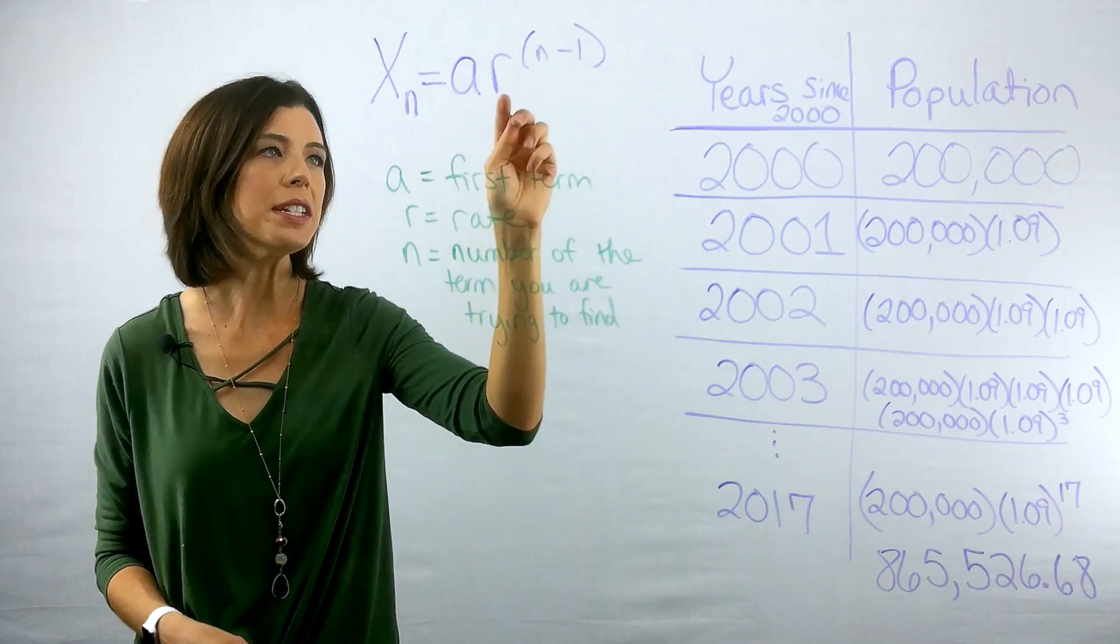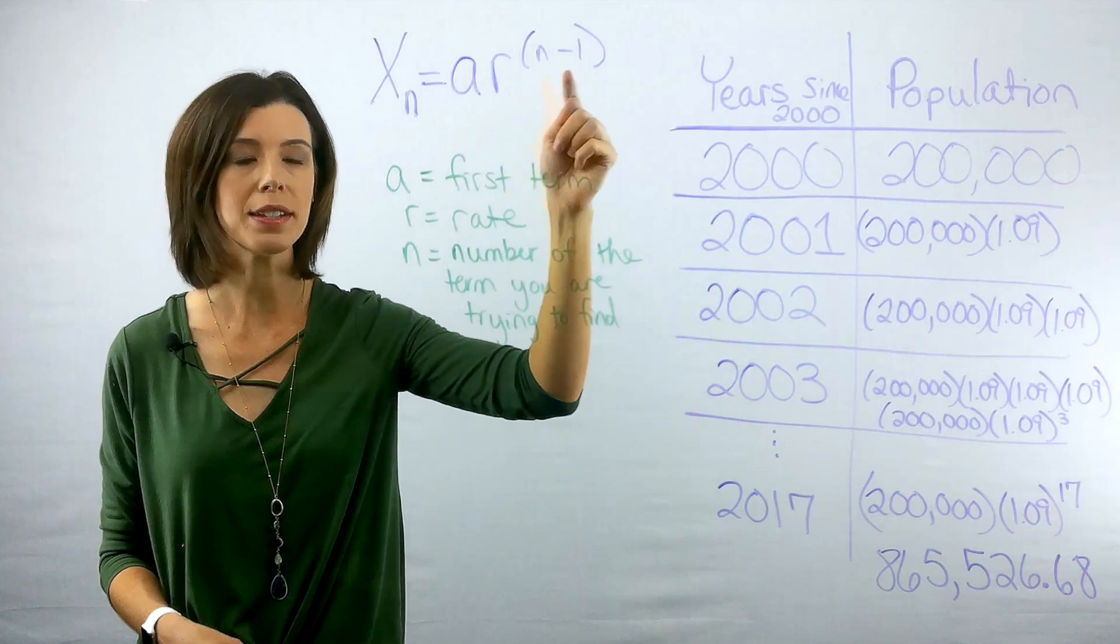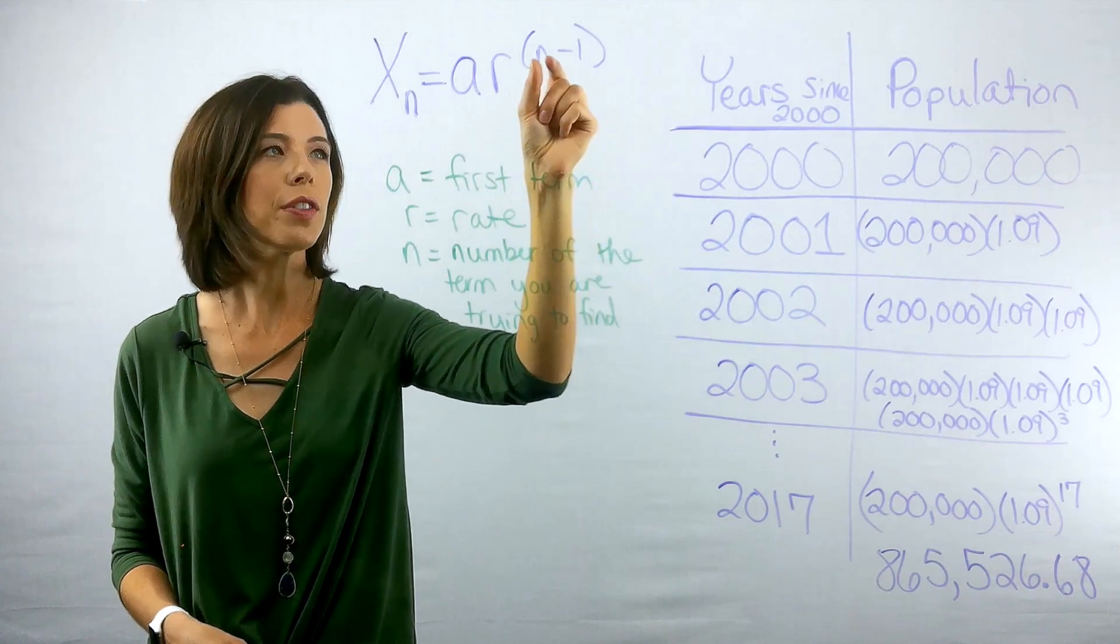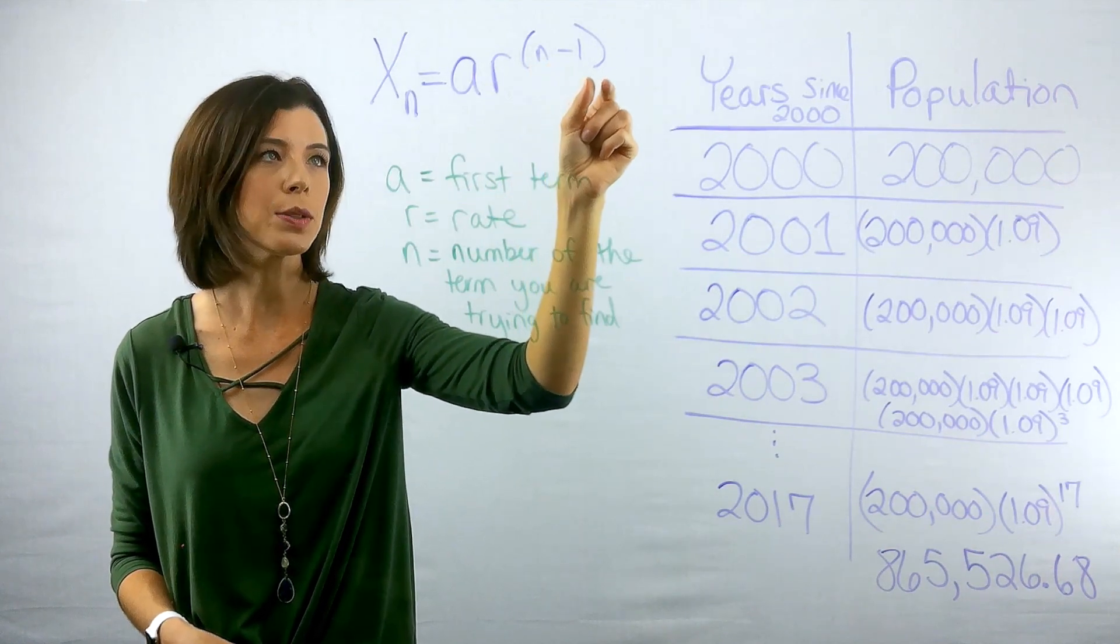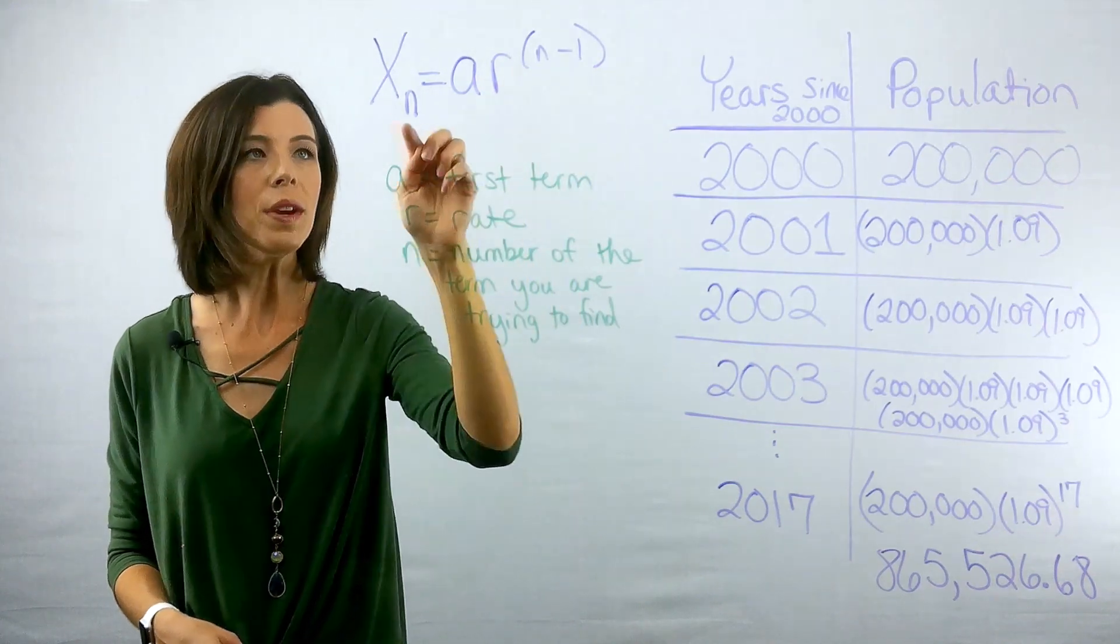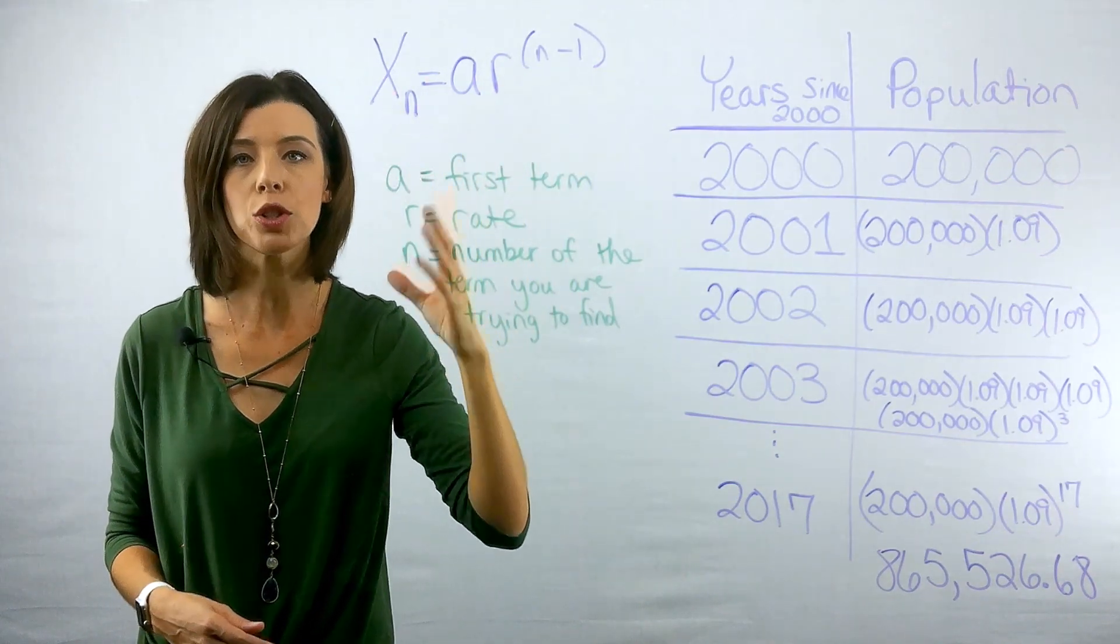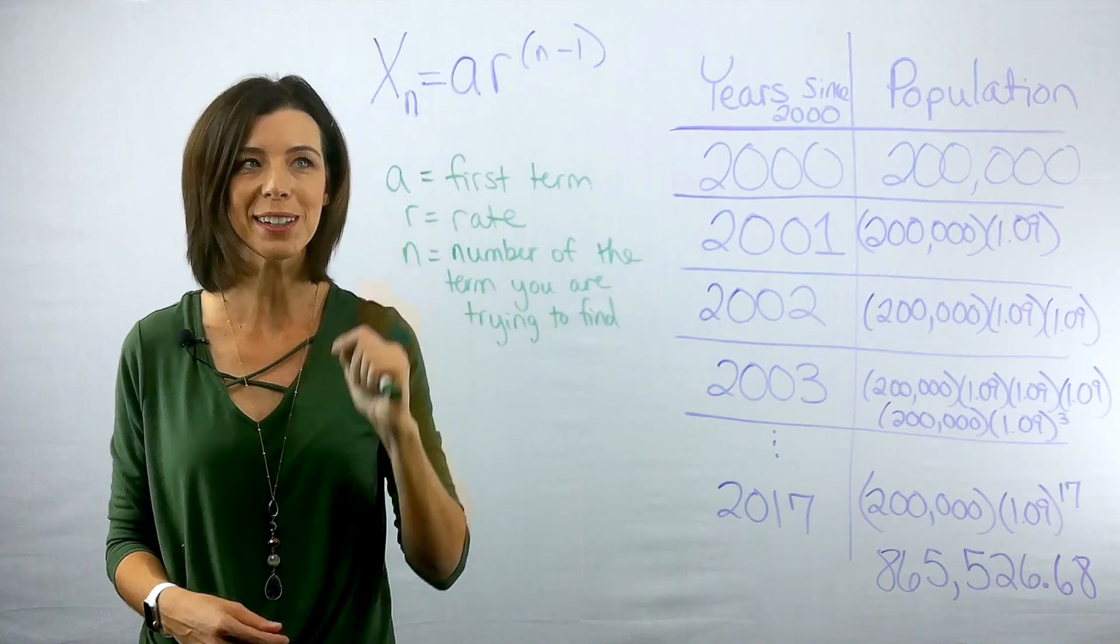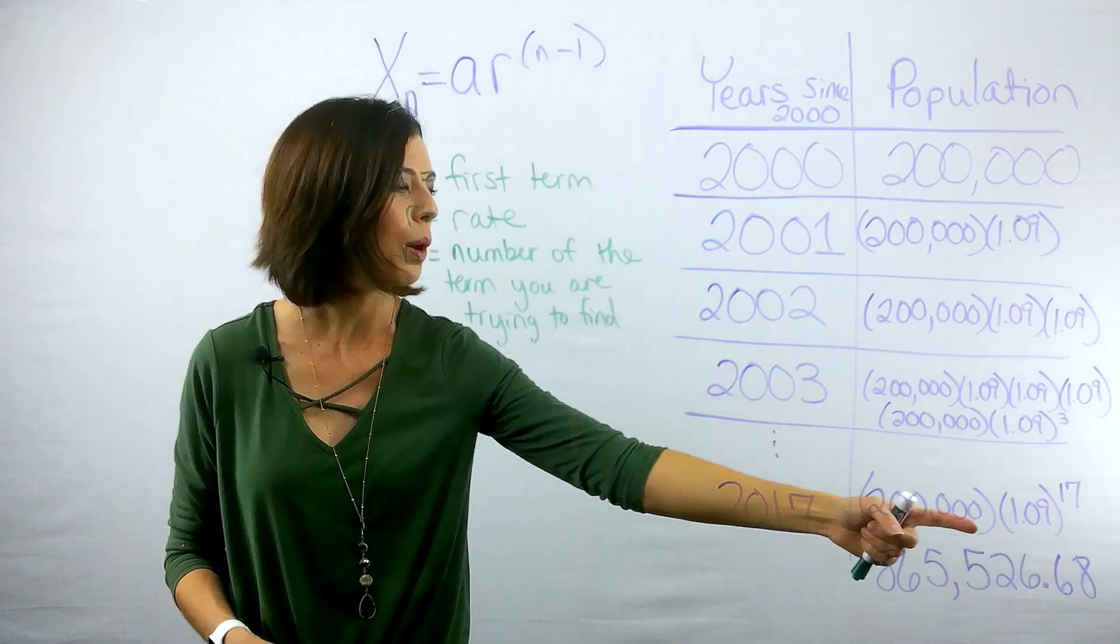So what this is saying is if we take our rate and we raise it to the power of n minus one, so the number term you're trying to find minus one, and then we take that and we multiply it times our first term, we can find any numbered term in the sequence. Let's take a look at how this relates to what we got here.